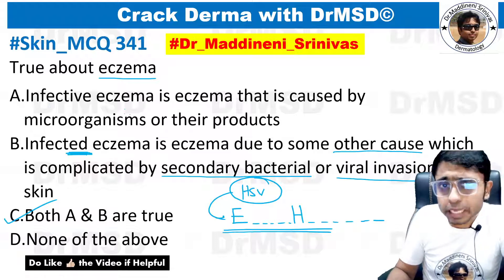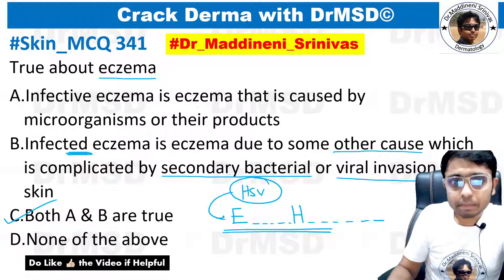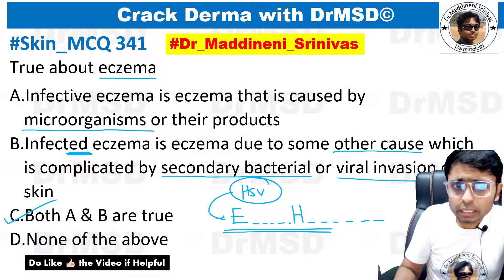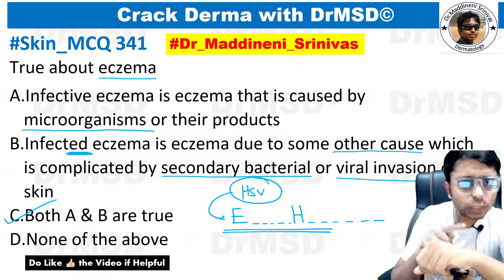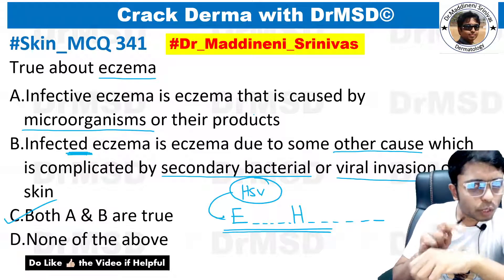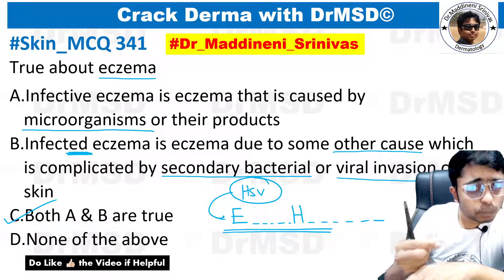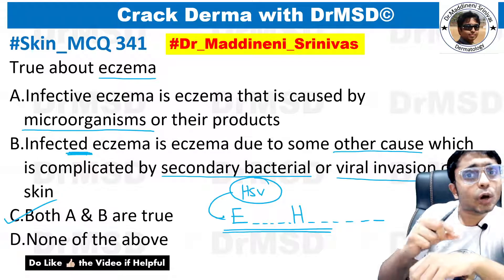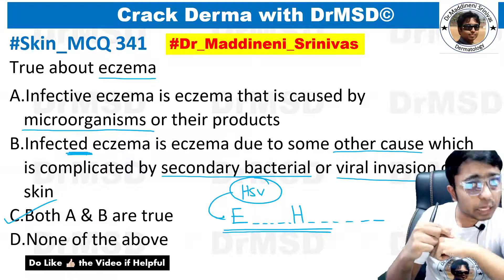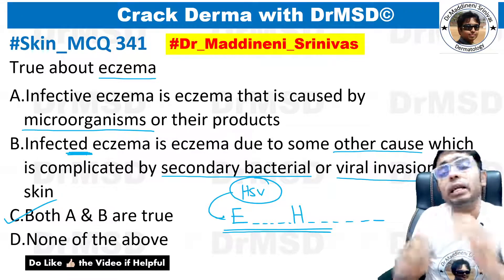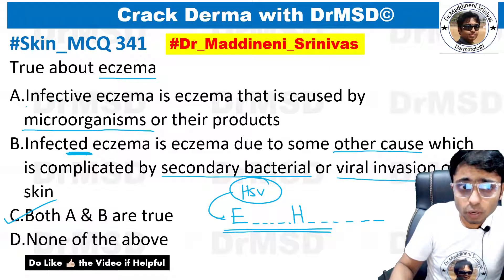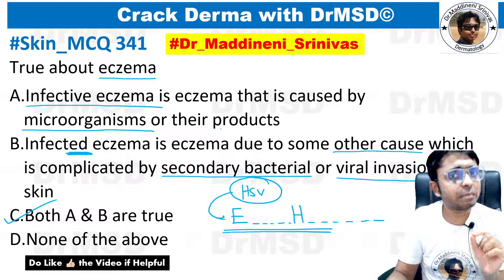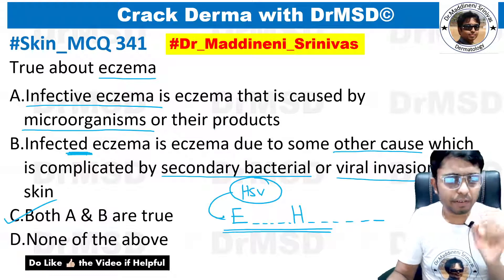Now looking at option A: infective eczema is eczema caused by microorganisms or their products. Simply put — for example, if there is a pustule that ruptures and its contents are released onto the surrounding skin, causing eczema changes in that surrounding skin, then we call it infective eczema. So I hope both infective eczema and infected eczema are now clear for everyone.